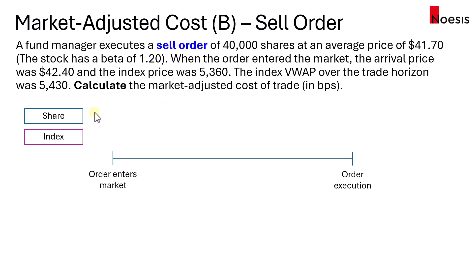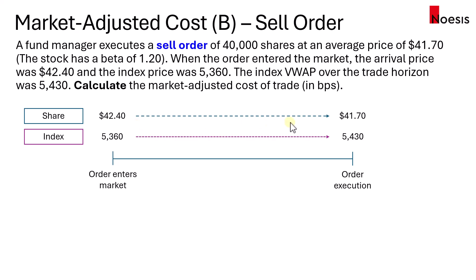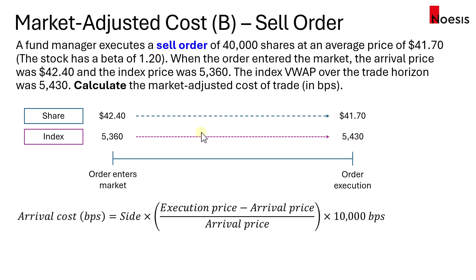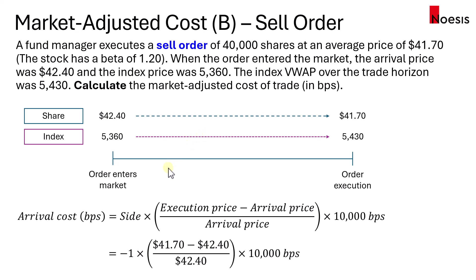For the shares, the arrival price is $42.40 and the execution price is $41.70 — so they sold the shares at the lower price. At the same time, the index actually appreciated from $5,360 to $5,430. We'll repeat the same process and calculate the arrival cost. This time the side is negative 1 because this is a sell order. We get: negative 1 times (41.70 minus 42.40) over 42.40 times 10,000 basis points, giving positive 165.09 basis points. There was a gap between arrival and execution, and this is seen as underperformance because the shares were sold at a price lower than the arrival price.